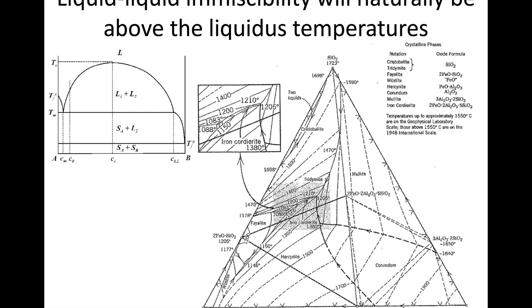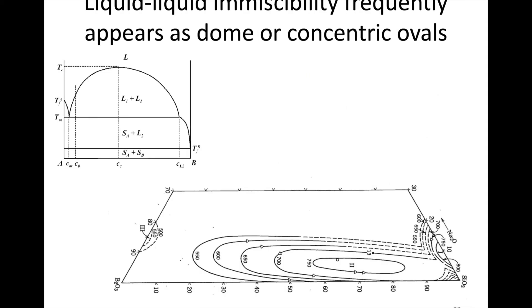Another way this appears on some diagrams is as concentric ovals or domes showing temperature contours of liquid-liquid immiscibility. There can be multiple such regions — this region, this one, and another down here — where two liquids form instead of one solution. Keep that in mind when examining these diagrams: if you see arc shapes or concentric ovals above the liquidus, they represent immiscible regions with two liquids.